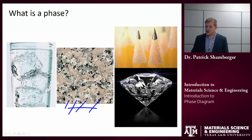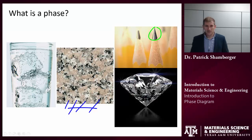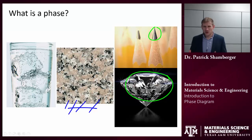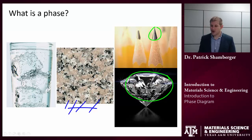We could also have materials that have the same composition, are both solids, even both crystalline solids, but are different phases. One example of this is graphite — what's contained in a pencil — versus diamond. Both are pure carbon, both solids, both crystalline solids, but the crystal structure is very different, and that leads to drastically different material properties. Graphite is black and very soft, while diamond is clear and very hard. Because they have different crystal structures and different properties, they're different phases.